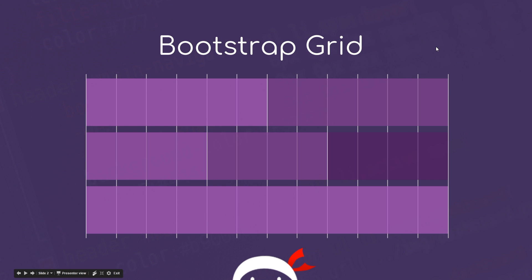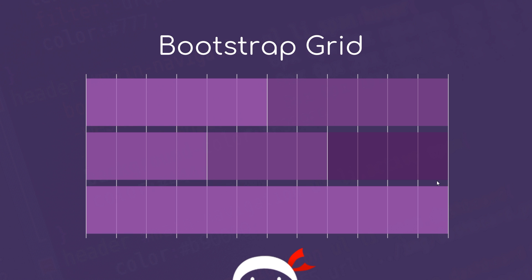We're saying to Bootstrap we want each element to be six columns in width. Or we could have three elements in a row and we want each to take up a width of four columns — one, two, three, four. Or we could just have one element which takes up twelve columns in width all the way across. There are loads of different combinations — they don't always have to be equal.